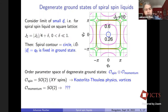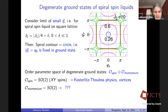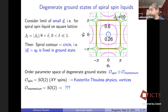Let's talk about the order parameter space of the degenerate ground states. It has a spin part and a momentum part. The spin part for XY spins is SO(2), leading to well-known Kosterlitz-Thouless physics and vortex-antivortex binding/unbinding. The momentum part is also SO(2), but this is much less studied. The key question: does it also lead to Kosterlitz-Thouless physics? We will see in this talk.